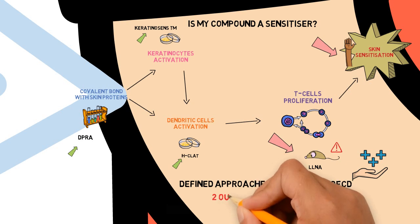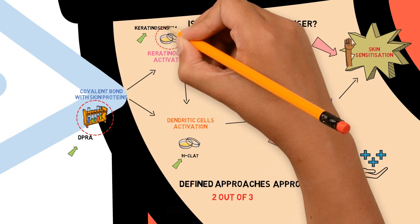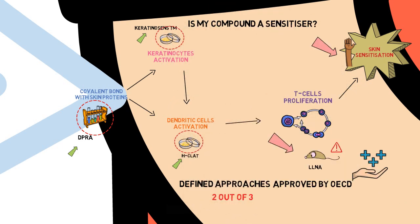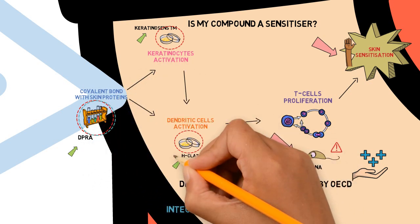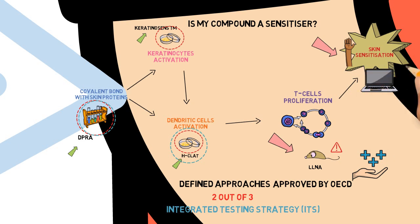The two out of three, combining results from three assays: DPRA, KeratinoSens, and h-CLAT. And the integrated testing strategy, or ITS, combining results from two assays, DPRA and h-CLAT, with an in silico prediction given by either Derek Nexus or the OECD QSAR Toolbox.